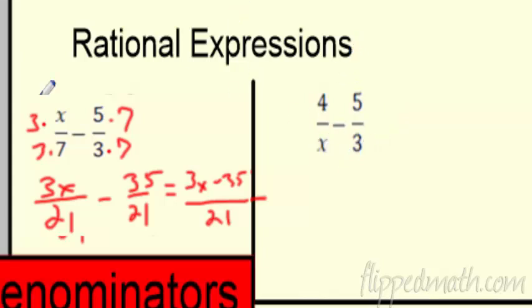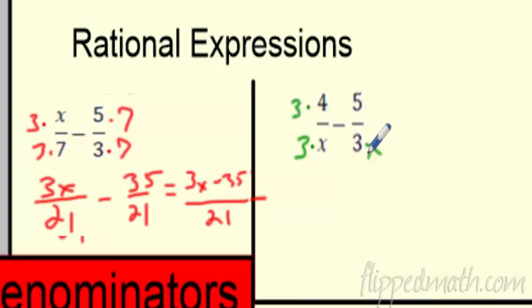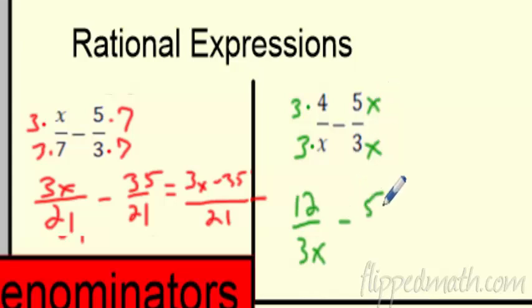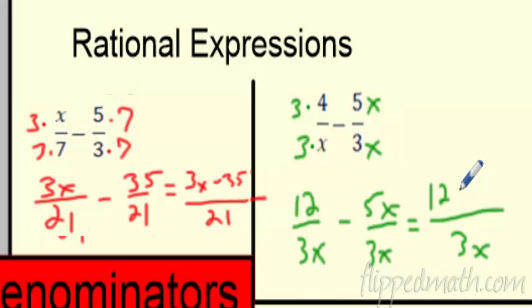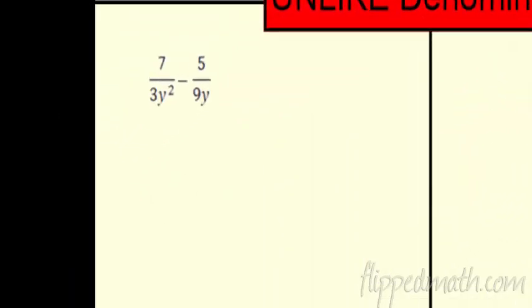It gets even crazier when the variable x is in the denominator. These are rational expressions, not just numbers. What's the common denominator? You have to make them the same — think about what each is missing. This one is x, this one is 3. X is missing a 3, so I times it by 3. This guy is missing an x, so I times by x. Whatever you do to the bottom, do to the top. So 3 times 4 gives 12 over 3x, minus 5x over 3x. Common denominator is 3x, so on top: 12 minus 5x.